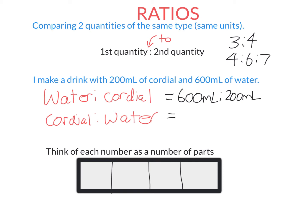If I want the cordial to water ratio, because cordial is written first, then it would be the opposite: 200 to 600. So if cordial is written first, then its number goes first in the ratio.